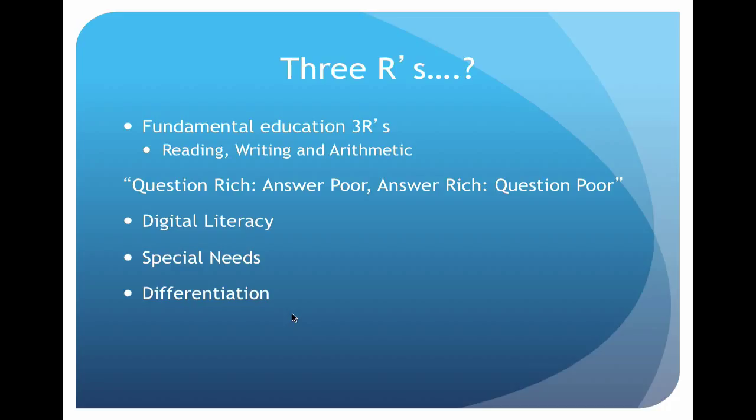We talk about differentiation, which is where we change the delivery of content, the content itself, and the assessment. If you differentiate your class to the point where every student has an individual learning plan, you remove the need for 'special needs' categories. If a student has dyslexia and you've differentiated the curriculum and learning for that student, they're no longer a special needs student. There's no such thing as gifted and talented or special needs when you compare a student to themselves — a gifted student is only gifted compared to someone else. Set up individual learning plans and you cover all your bases.